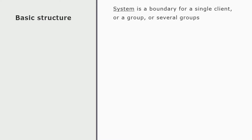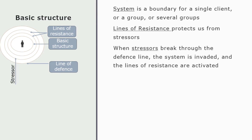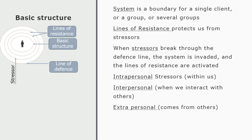The first concept is the basic structure. The system acts as a boundary for the client — which may be a single person, a group, or several groups. The client has a basic or core structure protected by lines of resistance. When stressors break through the defense line, the system is invaded and lines of resistance are activated. Stressors can be intrapersonal (within us), interpersonal (created when we interact with others), or extrapersonal (coming totally from others).